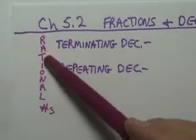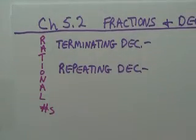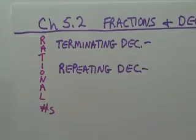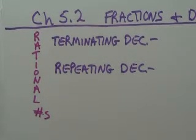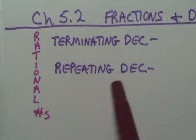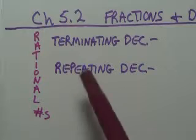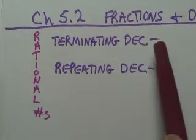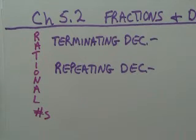Okay, yesterday we talked a little bit about rational numbers. Rational numbers, and some of the rational numbers are terminating decimals and repeating decimals. These are both what they call rational numbers.